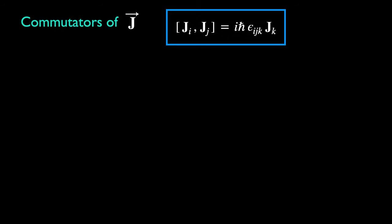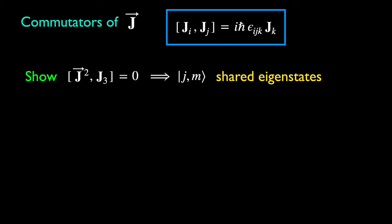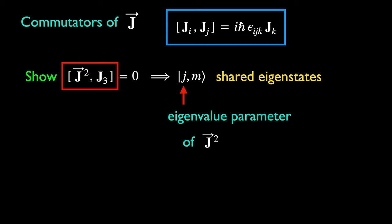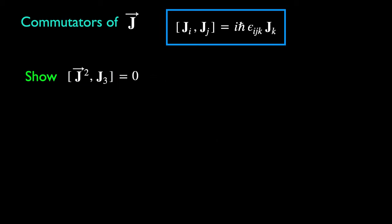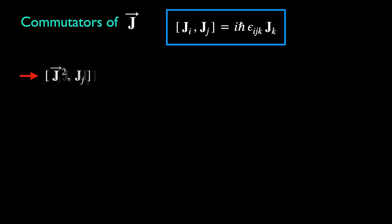Let's work out some more commutators of J that will be useful for solving its eigenstates. An obvious one is to show that the square of J commutes with its third component. This would imply that there would be shared eigenstates between these two observables. The quantum number J is taken to be the eigenvalue parameter of J-squared. We shall calculate this commutator using just the rotation algebra so as to obtain a general result that would cover all representations. Einstein's summation convention applies here — the index i is summed over. Expand this using the product rule for commutators.